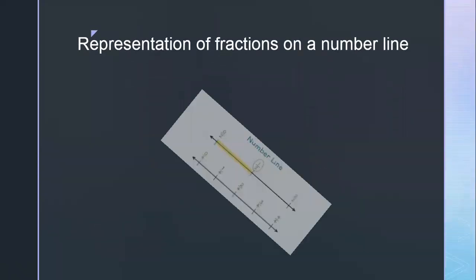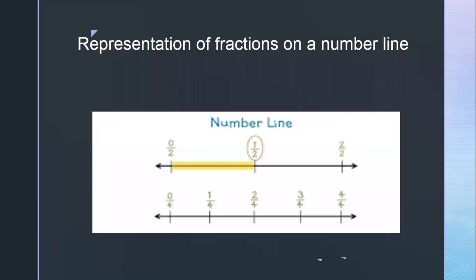Now, how will we represent fractions on a number line? You have already studied the number line in previous chapters — zero, one, two, three, four, and so on. If you want to write one upon two, you know it will come between zero and one. Zero upon two means zero and two upon two means one, so one upon two will come exactly between zero and one.